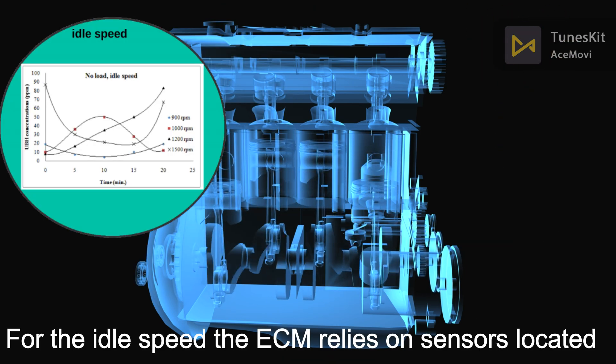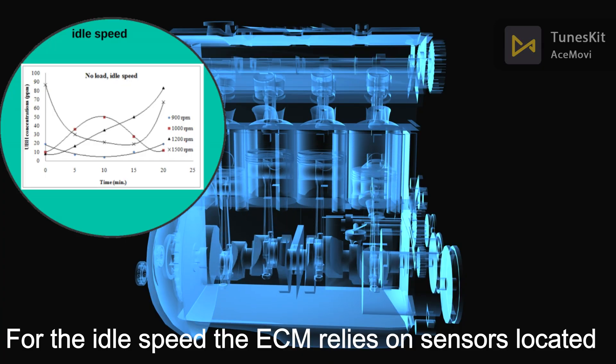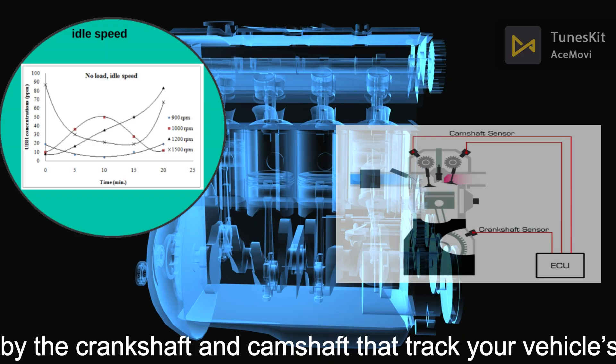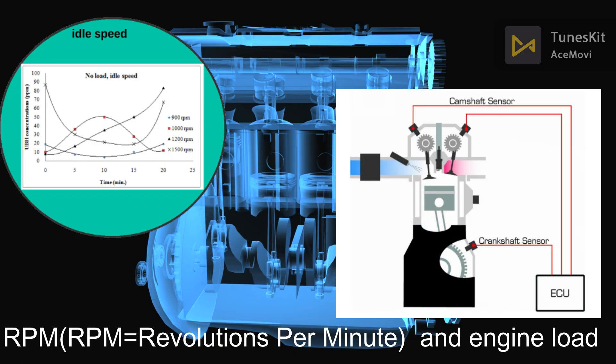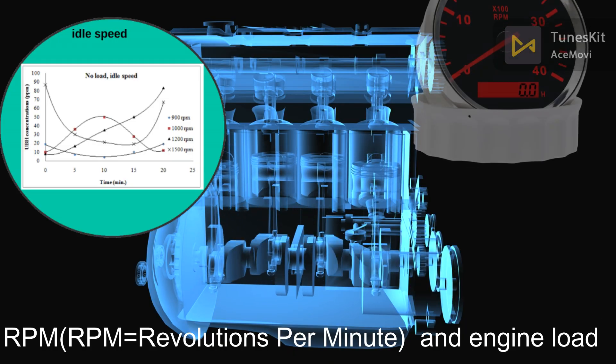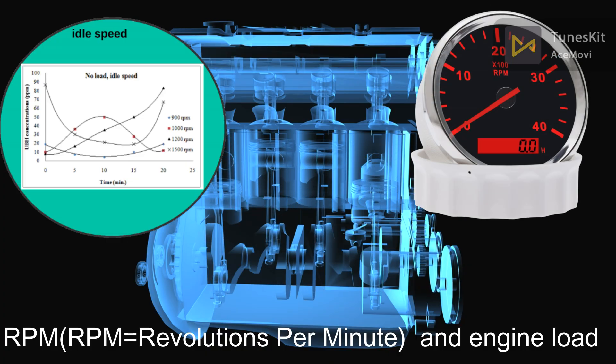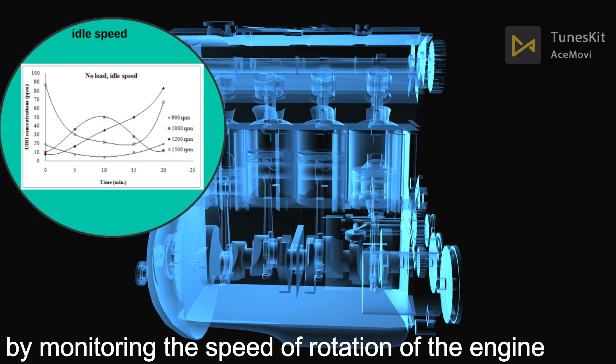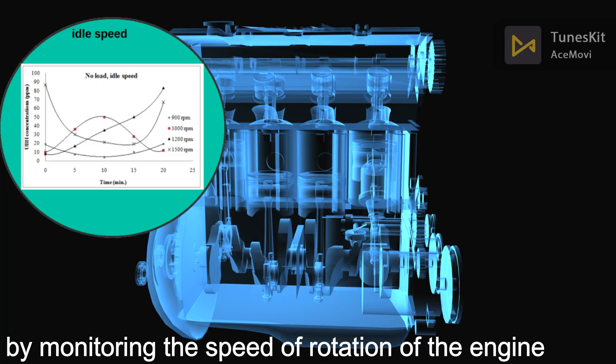For idle speed, the ECM relies on sensors located by the crankshafts and camshafts that track your vehicle's RPM (revolutions per minute) and the engine load by monitoring the speed of rotation of the engine.